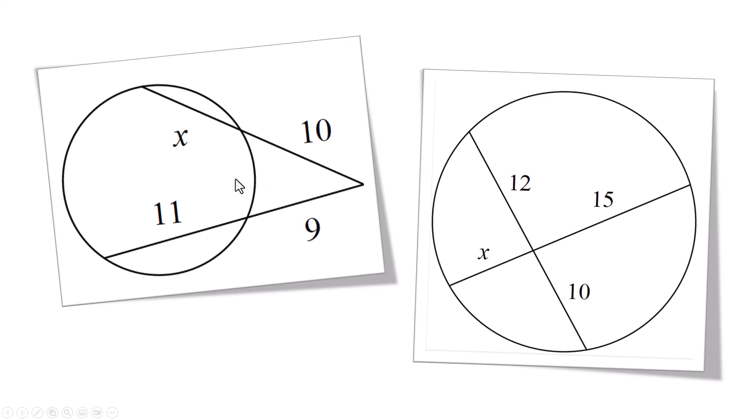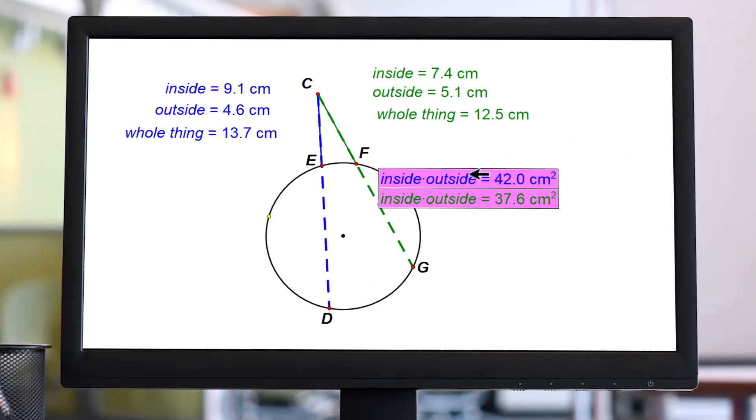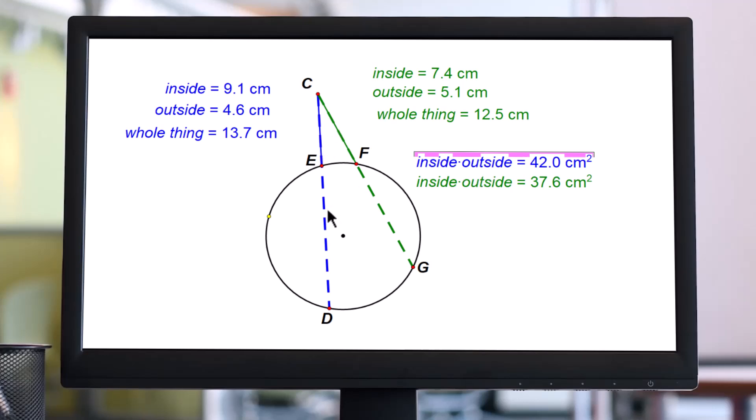Let me show you why the first one works the way it works. Okay, check this out. I've got a point on the outside, and I've measured the inside segment, which is this dashed line between E and D. I've measured the whole thing that goes from C to D, and I've measured the outside. And I did the same thing with this green. And I can move these around, and you can see the numbers are changing.